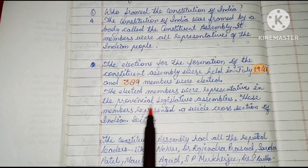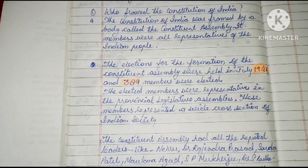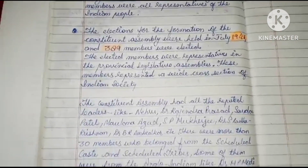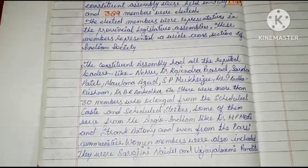Sab jo elect kiye gaye the, woh members kahan se aaye the? Yeh pure bharat ke provincial, yani ki pure state se liye gaye the. Wohi apne aap mein ek achhe leaders the. Har ek field mein bhi unko achhi si jankari thi.